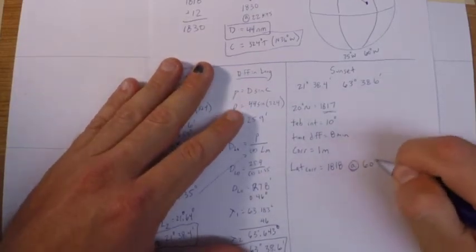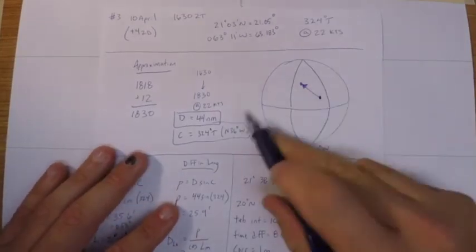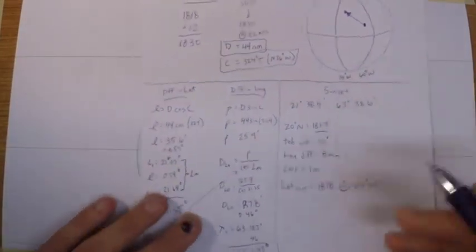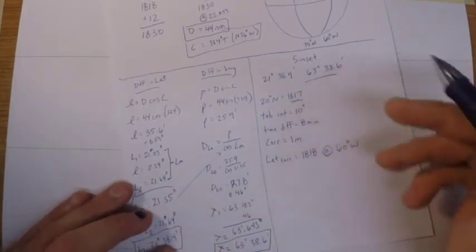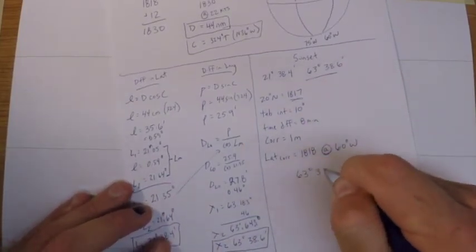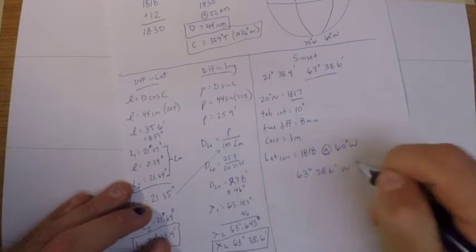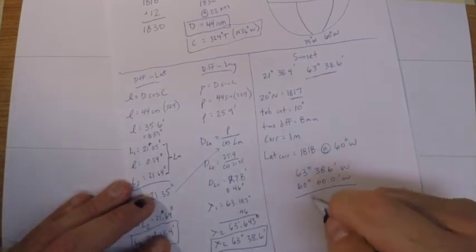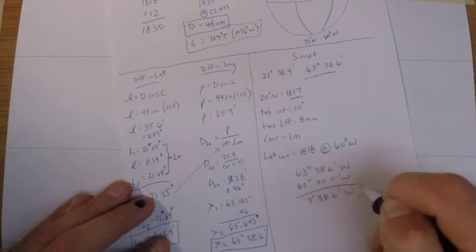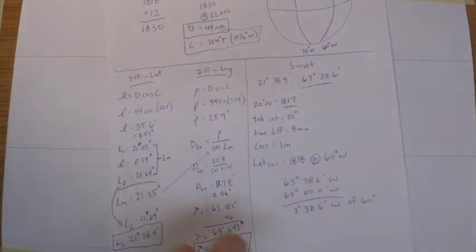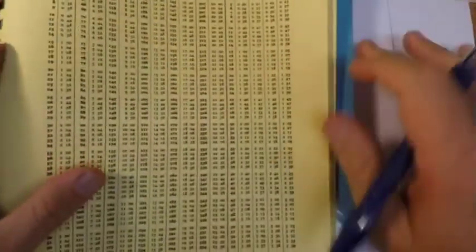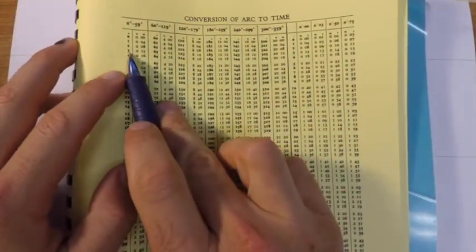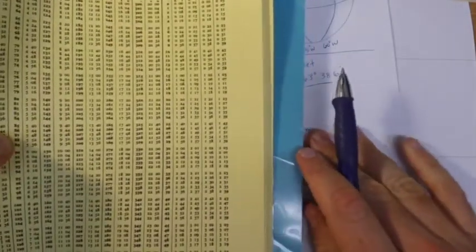And that's going to be for 60 degrees west, for any standard meridian, it would be for 75, 90, 45, etc. So then we got to find how far away our longitude is from the standard meridian. And we're 63 degrees 38.6 minutes west, away from 60 degrees 00 west. So we're 3 degrees and 38.6 minutes west of 60. So I need to convert that arc, that 3 degrees and change west of 60, to a time. So I'll use the conversion of arc to time tables.